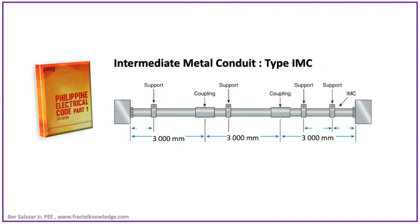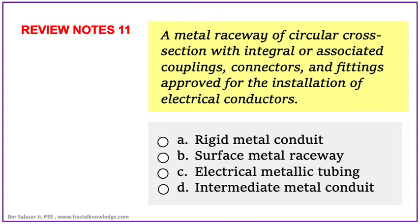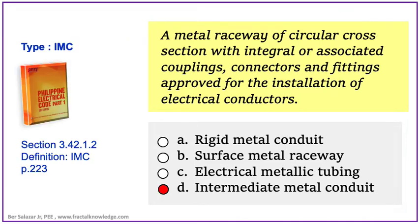Let us proceed to Article 3.42 Intermediate Metal Conduit. A question appearing in the PEC exam about Intermediate Metal Conduit or type IMC is found in PEC 2017, Article 3.42, page 223, which covers the use, installation, construction, and specification of IMC. The first problem is a definition: it is a metal raceway of circular cross-section with integral or associated couplings, connectors, and fittings approved for the installation of electrical conductors. The answer is Intermediate Metal Conduit, letter D, found at section 3.42.1.2, page 223.